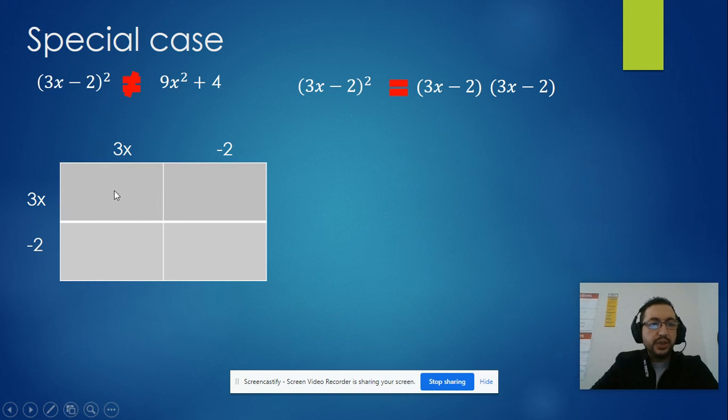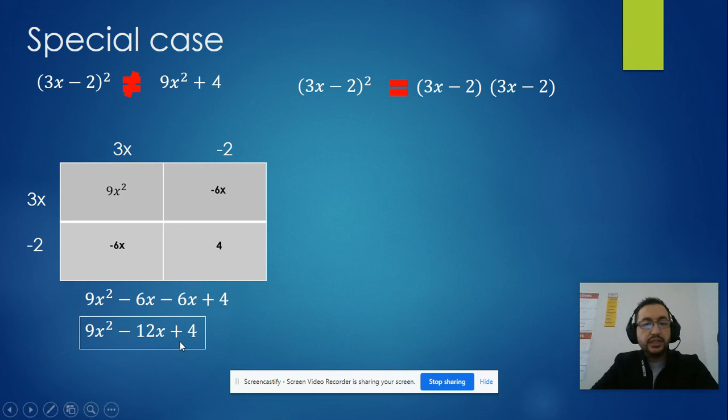So 3x times 3x will be 9x squared. 3x times negative 2, negative 6x. 3x times negative 2, negative 6x. Negative 2 times negative 2, 4. Then combine whatever is inside. 9x squared minus 6x minus 6x plus 4. Combine like terms. 9x squared minus 12x plus 4.